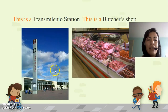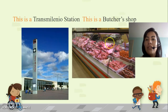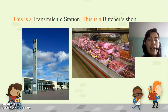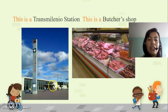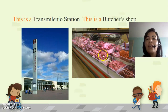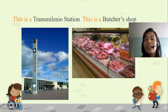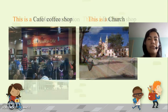What is this? This is a Transmilenio station. Esta es la estación de Transmilenio; for example, for us, the Portal Suba. What is this? This is a butcher's shop. ¿Y qué es esto? Esta es una carnicería. We say butcher's shop.